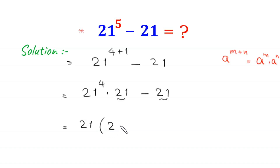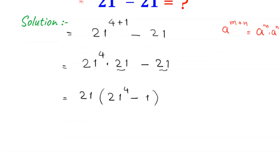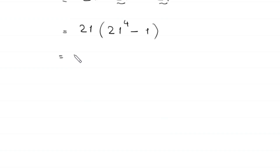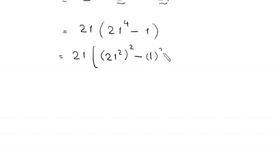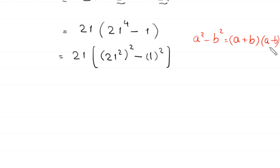Next, we factor out 21 as a common factor, giving us 21 times (21 to the power 4 minus 1). Now 21 to the power 4 can be written as (21 squared) whole squared, and 1 can be written as 1 squared. By using the algebraic identity a squared minus b squared equals (a plus b)(a minus b), this becomes 21 times (21 squared plus 1) times (21 squared minus 1).